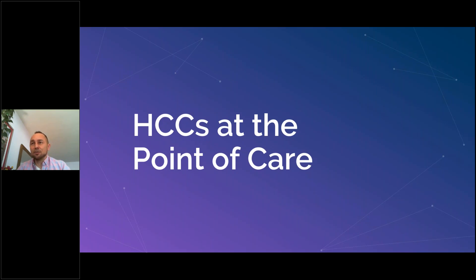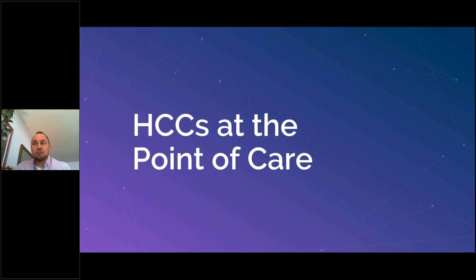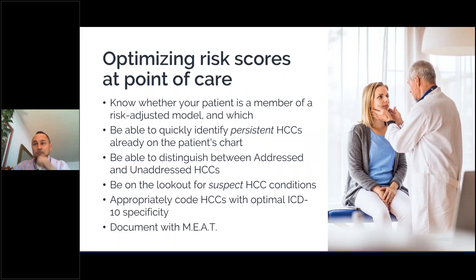Now that we have an understanding of what these risk models are and why they matter, let's talk brass tacks. In order to be successful with your HCC or other risk programs, your providers are going to play an absolutely crucial role. These models are really more about managing patients' chronic conditions and keeping them from becoming more severe — about providing better and more efficient care, and getting your organization reimbursed appropriately for the care you're already providing. Success with risk programs really comes down to three things: find the HCCs, code the HCCs, and put some meat behind the HCCs.